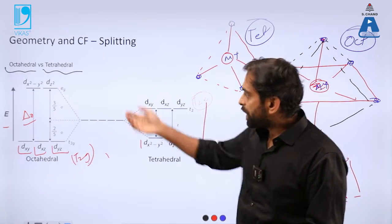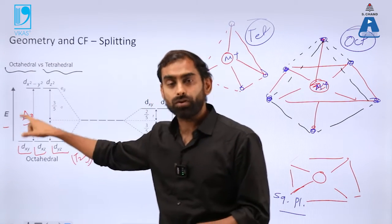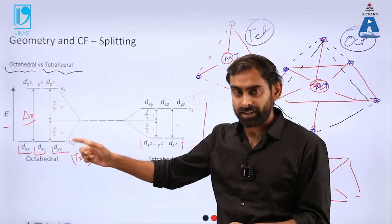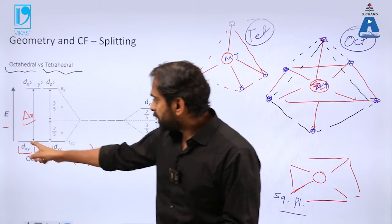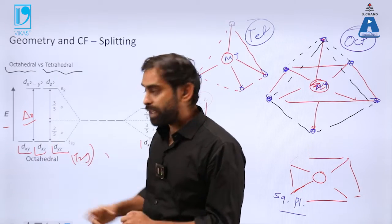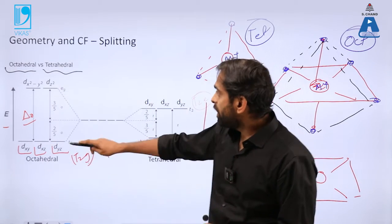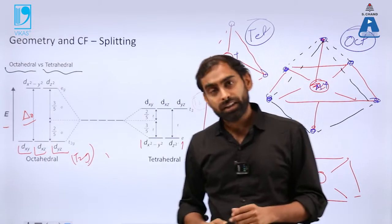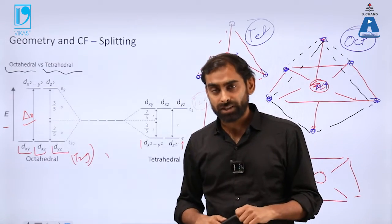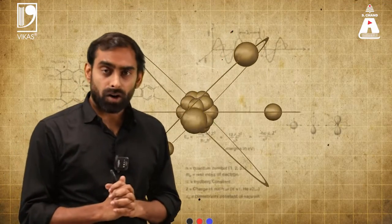Whereas in case of octahedral geometries, those compounds which are having six ligands or hexadentate compounds, they will have first electrons which will be filled in xy, yz, and zx, and then they will be filled in x square minus y square and dz square. So that was, I think, all in this crystal field splitting concept.